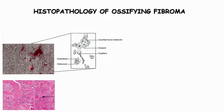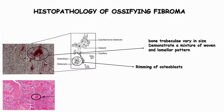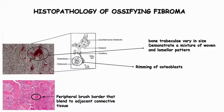The bony trabeculae varies in size and exhibits a woven and laminar pattern, and also shows rimming of osteoblasts at its border. The cementum-like structure shows a peripheral brush border, meaning it blends into the adjacent connective tissue.